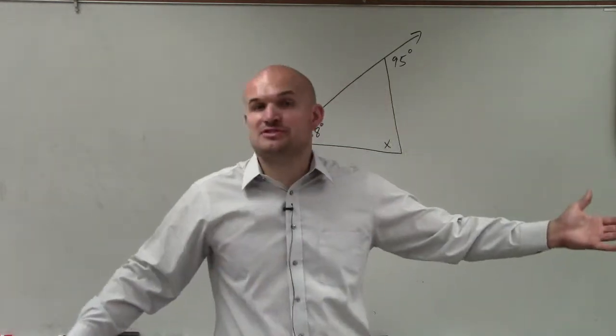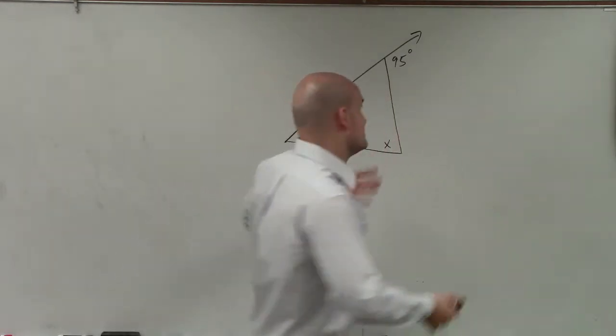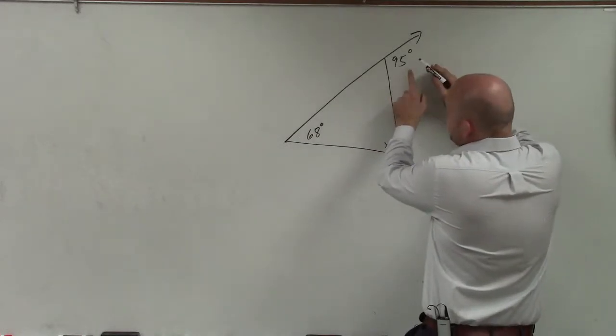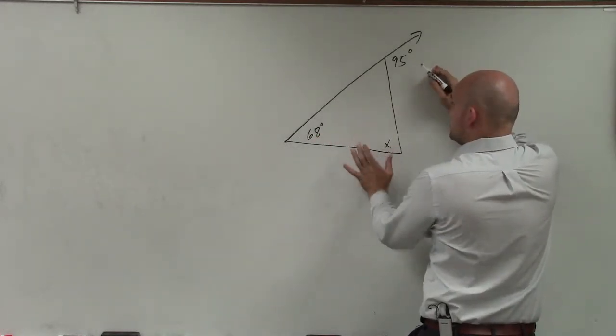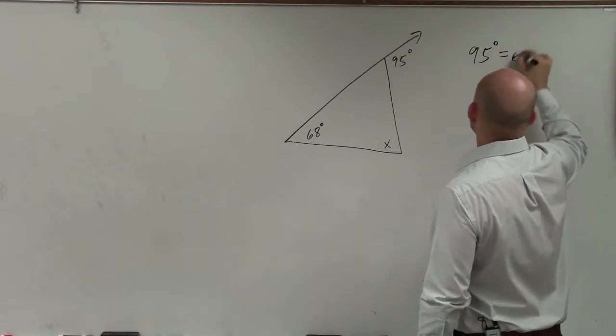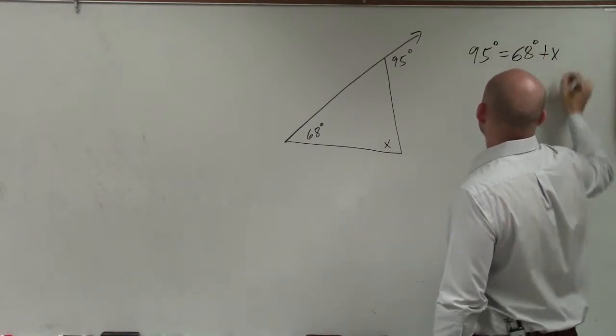So the best way that I would do to solve this would be my exterior angle theorem, which states that my exterior angle is equal to the sum of my opposing interior angles. So I can simply just say 95 degrees is equal to 68 degrees plus x.